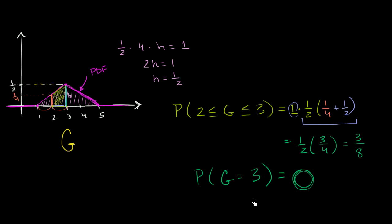Which leads to another interesting question. Here we saw that the probability that g is between 2 and 3, including 2 and 3, was equal to 3/8.